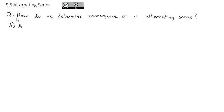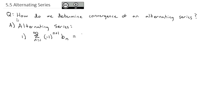First, we'll define the alternating series a little more clearly. There are two types, and they're almost identical. If we have the sum as n goes from 1 to infinity of negative 1 to the n plus 1 times some other series, when n is 1, we get 1 plus 1 which is 2, and negative 1 squared is positive 1. So we get the first b term, then subtract the second b, add the third b, subtract the fourth b, and so on — alternating between positive and negative.